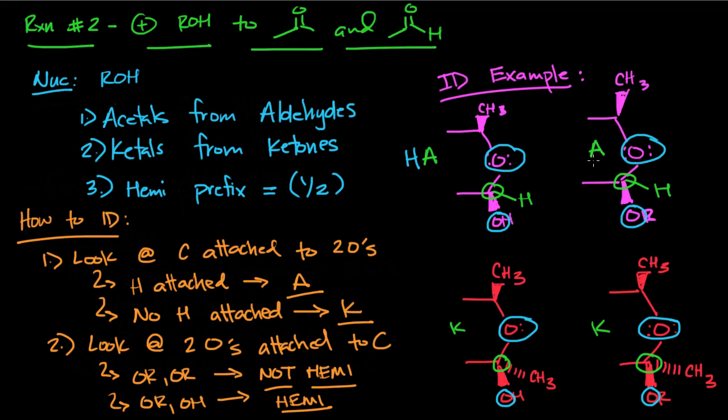Bottom ketals, right? Right here there's an OH. That means only one alcohol has reacted, so it's going to be a hemiketal. Second example on the bottom, there's an OR. That means it's a full ketal.